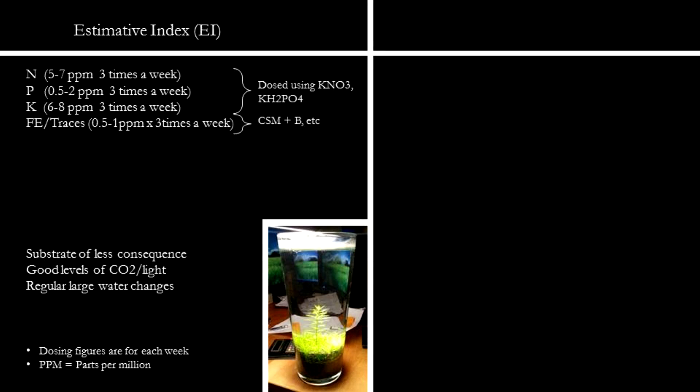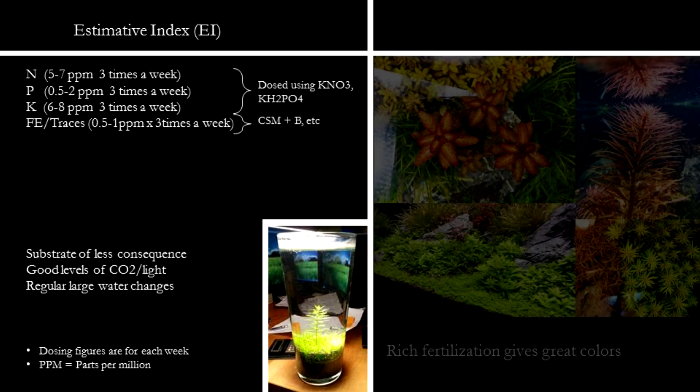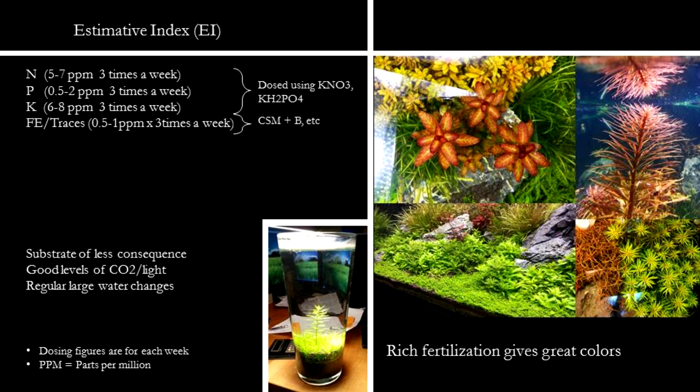Let us look at two commonly used dosing systems that produce good results. The first system, well known to most of our friends in America, is the EI dosing system, also known as the sledgehammer. In the EI dosing system, it is usually done through using dry chemicals such as potassium nitrate, which allows a large fertilizer dose to be done cheaply. Macros (MPK) as well as iron and tracers are dosed in large amounts three times a week, providing a non-limiting level of nutrients for plants to grow.